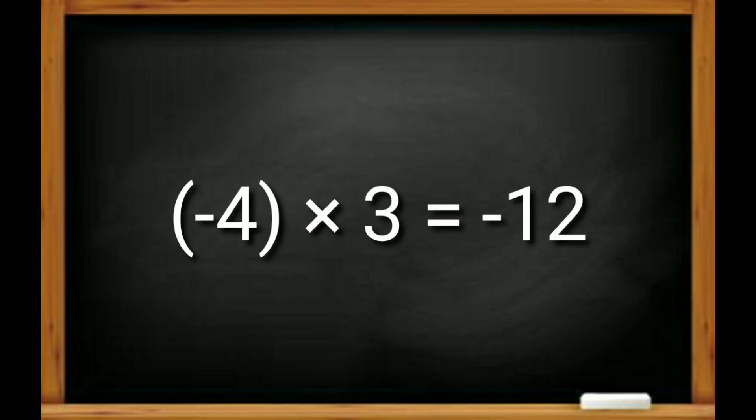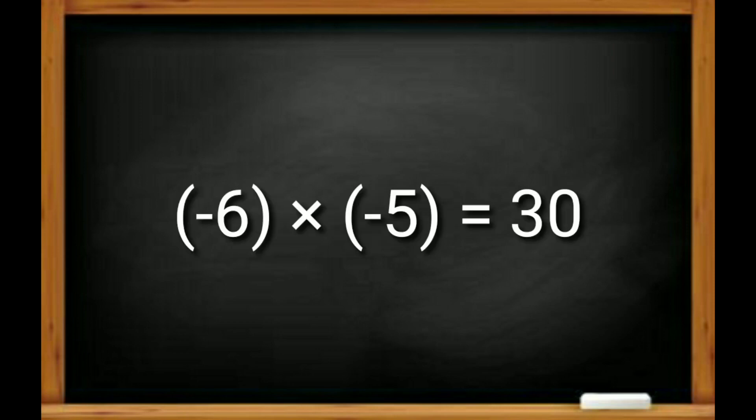So, let's solve another example. Minus 4 multiplied by 3 is equal to minus 12, because minus multiplied by plus is always minus. Minus 6 multiplied by minus 5 is equal to 30, because minus times minus is always a positive number.